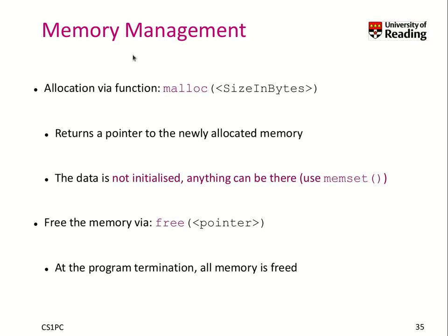Let's look at how memory management works in more detail. You call malloc, give the size in bytes you want, and it returns a pointer to the newly allocated memory. The data is not initialized, so anything can be there. There is a useful function called memset that helps you initialize the data with, for example, zeros. Once you no longer need the data at that pointer, you call free. Note that when the program terminates, all memory it has allocated is freed as well.